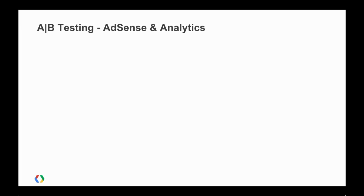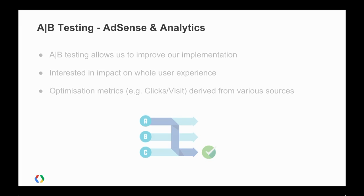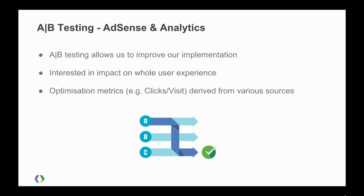The final use case I'd like to talk about actually brings AdSense data and analytics data together. For those not familiar with A/B testing, it's the practice of releasing two or more variants of a development at the same time and evaluating performance according to a particular metric or goal. When we're doing that for AdSense, we're not just interested in AdSense metrics like click-through rate or revenue. We're interested in how these ads actually impact our overall user experience — whether it impacts downstream conversion or affects user engagement. As a result, some of our optimization metrics have to be derived from various sources, and usually that means going into different user interfaces, querying separately, and putting them together in Excel.